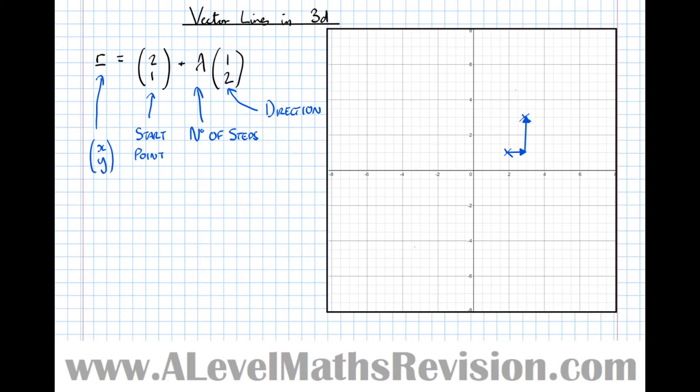Say lambda equals 2. Then actually, we're going to start at (2,1), which is here. And instead of traveling one step in this direction, we're going to travel another step in this direction as well. So let's travel another step in this direction: (1,2), to take us to this point here.